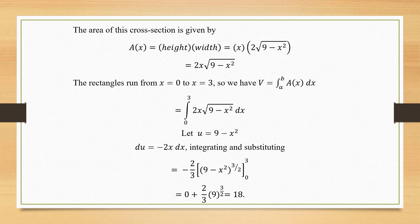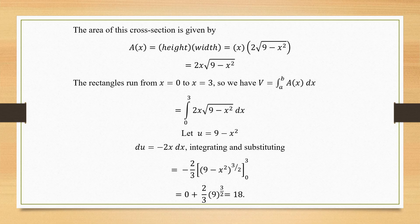This integration can be solved using the method of substitution. Let u = 9 − x². Then du = −2x dx, so 2x dx is replaced by −du. The integral becomes −∫ √u du, where √u = u^(1/2). Integrating u^(1/2) gives u^(3/2) / (3/2), so the result is −(2/3) u^(3/2). The limits are x = 0 to 3.